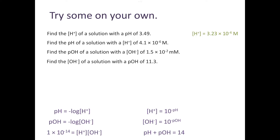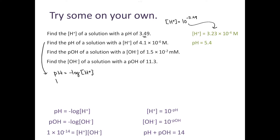To find the hydrogen ion concentration of a solution with a pH of 3.49, we use H-plus equals 10 to the negative pH, so 10 to the negative 3.49, giving a hydrogen ion concentration of 3.23 times 10 to the negative 4th molar. To find the pH if the hydrogen ion concentration is 4.1 times 10 to the negative 6th, pH equals the negative log of 4.1 times 10 to the negative 6th, giving a pH of 5.4. Since that concentration is bigger than 10 to the negative 7th, the solution is acidic, which the pH value confirms.